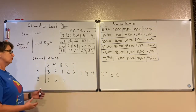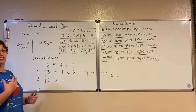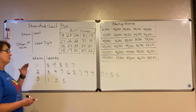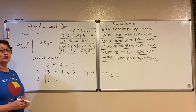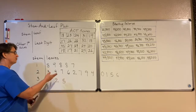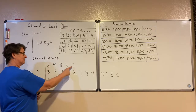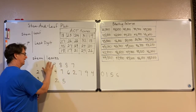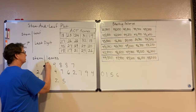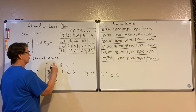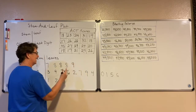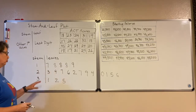As we make a stem and leaf plot, I've made a few mistakes I need to fix. One thing we do with our leaves is we always put them in order from least to greatest. So in this case I have a seven, three eights, and a nine. I should write it so that my seven is first, then those three eights, and then a nine. It shows the same data, but now in the correct order.